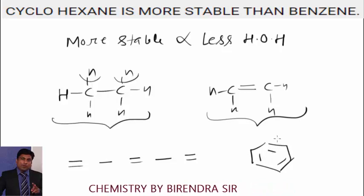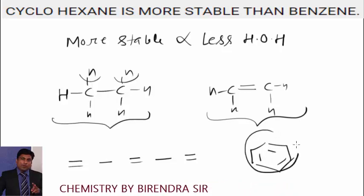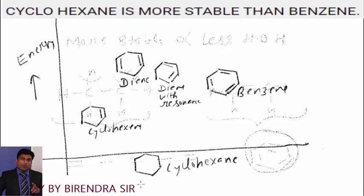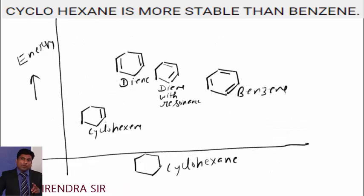Guys, consider this graph. Now what happens when cyclohexene is hydrogenated, we get cyclohexane. This much of energy will be evolved.